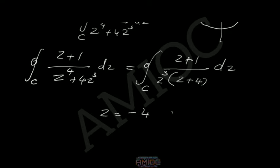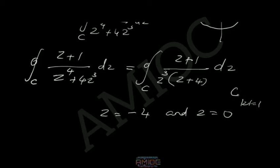The denominator gives zeros at z = 0 and at z = -4, where the function fails to be analytic. We are given C is the contour |z| = 1. The point z = -4 is outside the contour C.